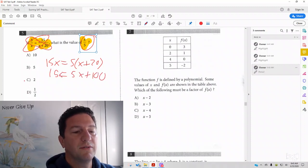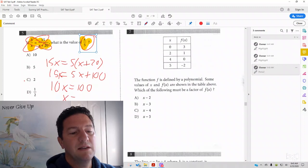And then you subtract 5x from both sides. And then you divide both sides by 10. And then you get x equals 10.